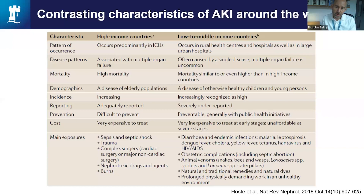One fairly remarkable thing about the AKI diagnostic criteria is how they retain their associations with poor outcomes, in particular with mortality, across a very wide range of healthcare settings. Beyond that, there are very different characteristics when you look at acute kidney injury in high versus lower income countries, as summarised on this slide.